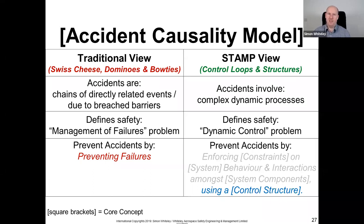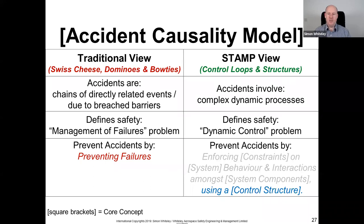The STAMP-based approach operates in the realm of control loops and structures. It predicates that accidents involve complex dynamic processes, and it redefines safety as a dynamic control problem. We prevent accidents by enforcing constraints on system behavior and interactions among system components using a control structure.